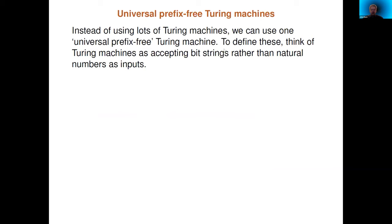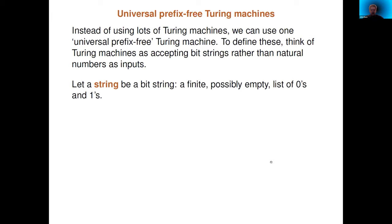To make more progress in this theory, people try to use a single universal machine where the input is thought of as a program together with a number you feed into that program. It turns out the good way to go about this is to think of Turing machines as accepting bit strings rather than natural numbers as inputs. I'll define this prefix-free concept in those terms. A string means a finite, possibly empty, list of zeros and ones.